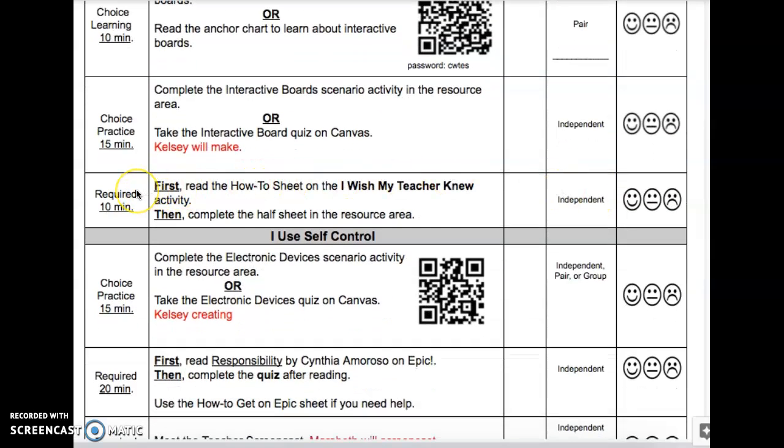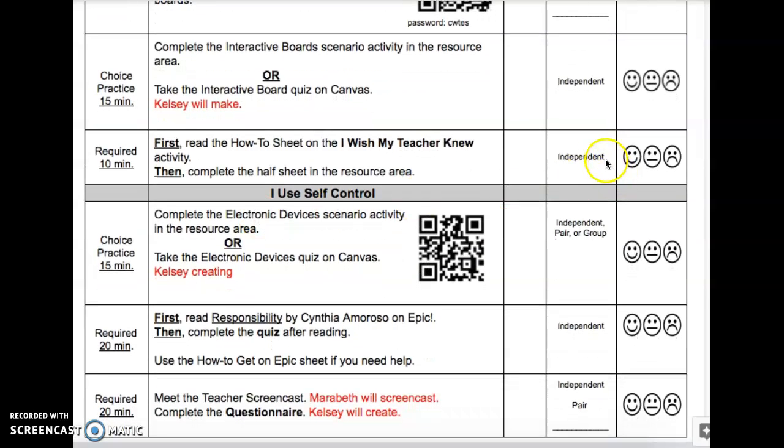Now down here the third thing in this section is required. It means that you need to complete it. There's not a choice here. It's just one activity that everybody needs to complete. It says first read the how-to sheet on the I Wish My Teacher Knew activity. Then once you first after you read the how-to sheet, you're going to complete the half sheet in the resource area. Also it's independent means you complete it on your own.